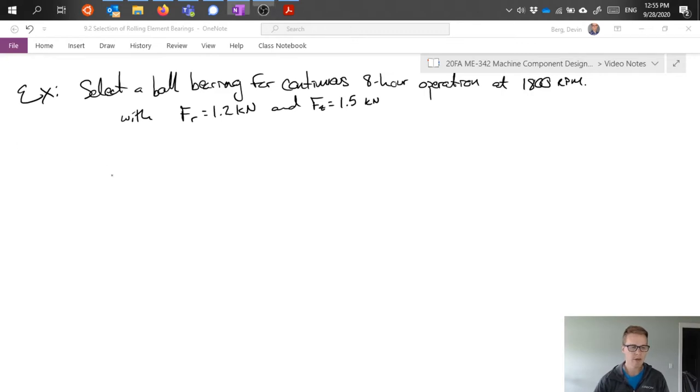To go ahead and start solving this problem we need to figure some things out. Step one might be to find the equivalent load so we can use it in our equations. Equivalent load first needs the ratio of thrust load to radial load. So we can divide that 1.5 by 1.2 and we get 1.25 as that ratio.